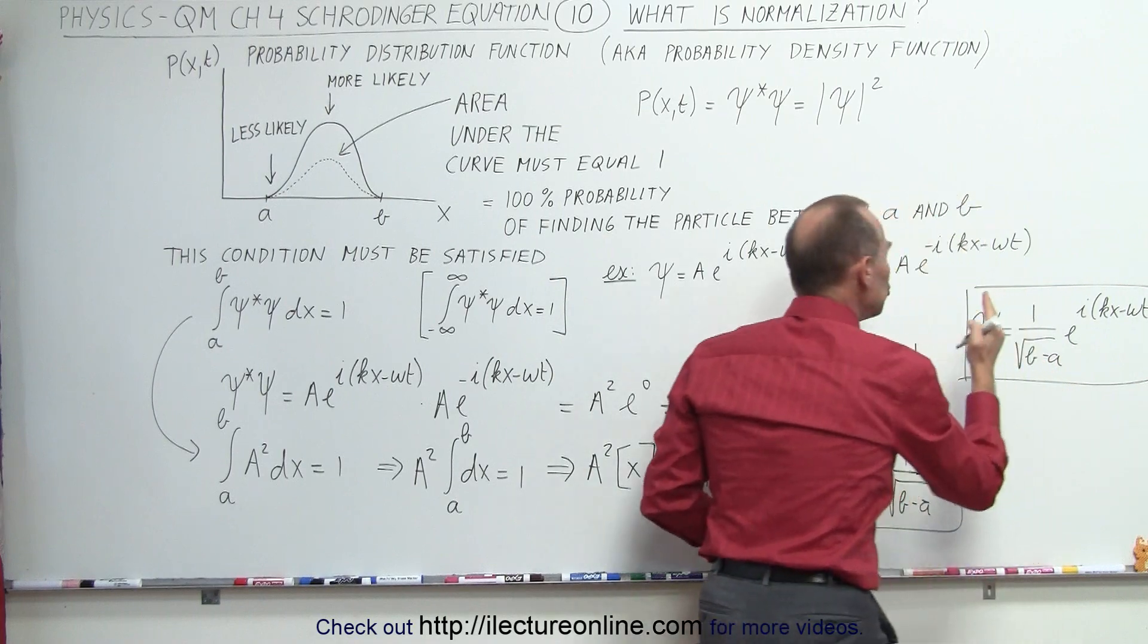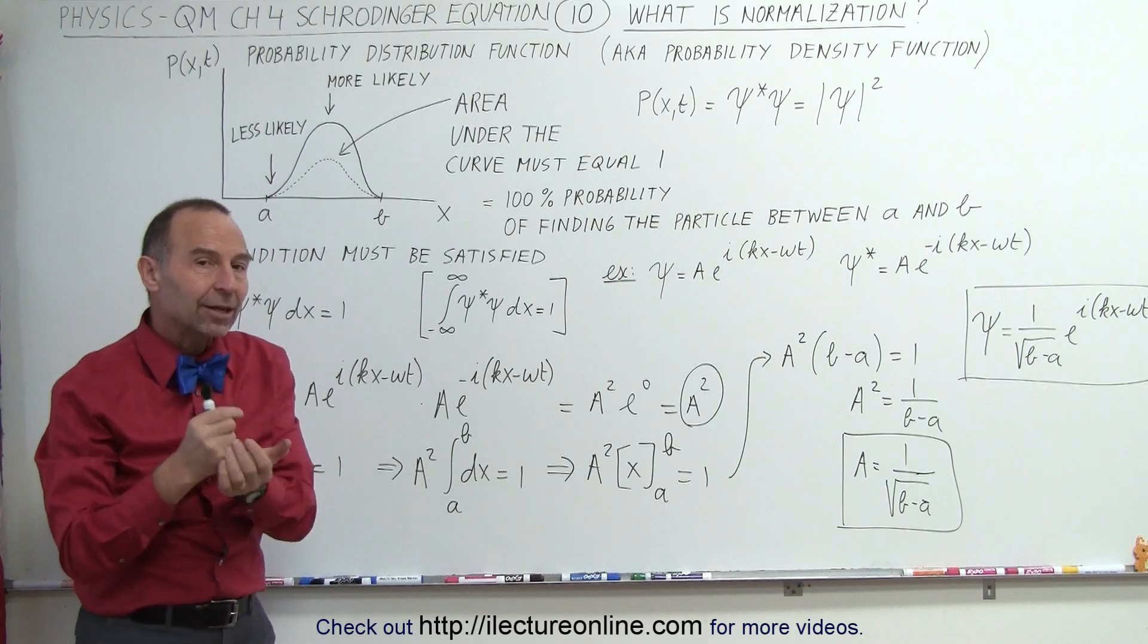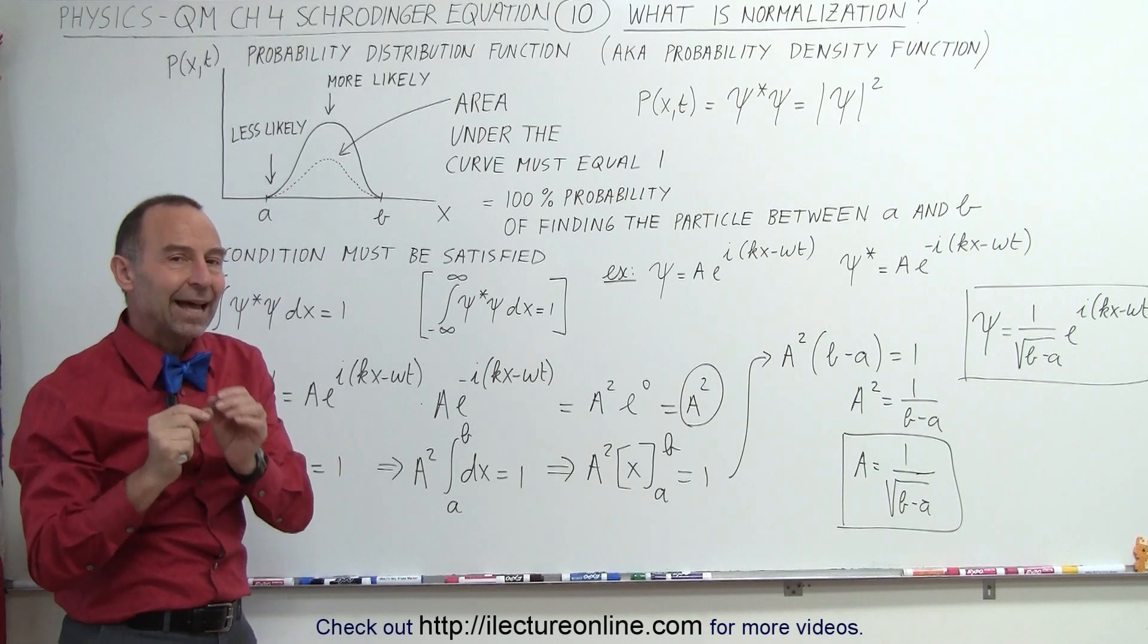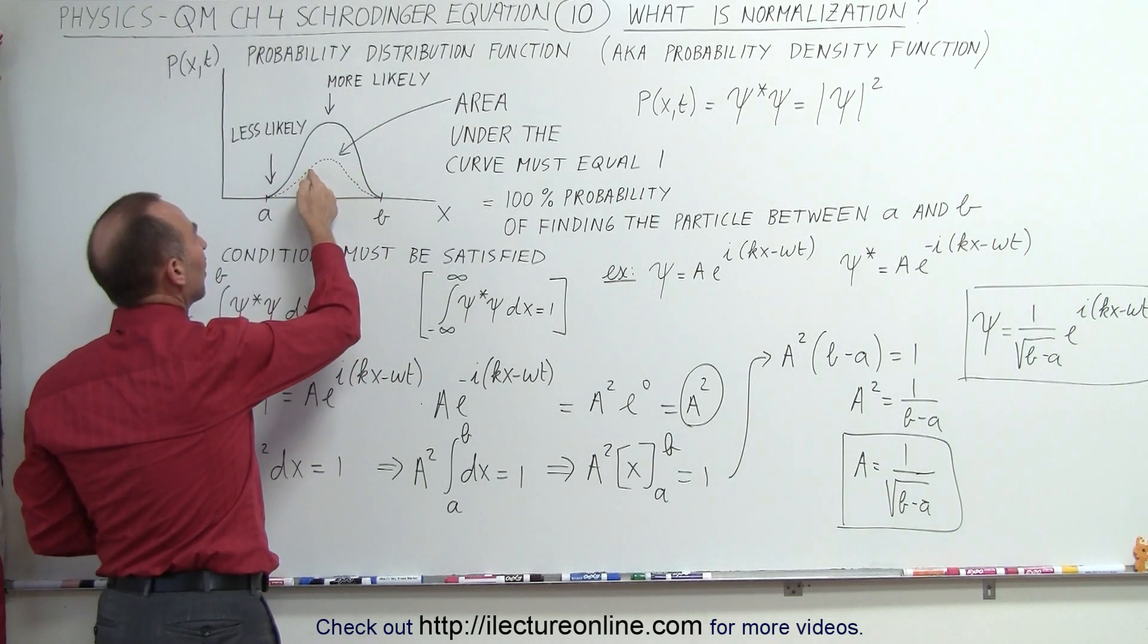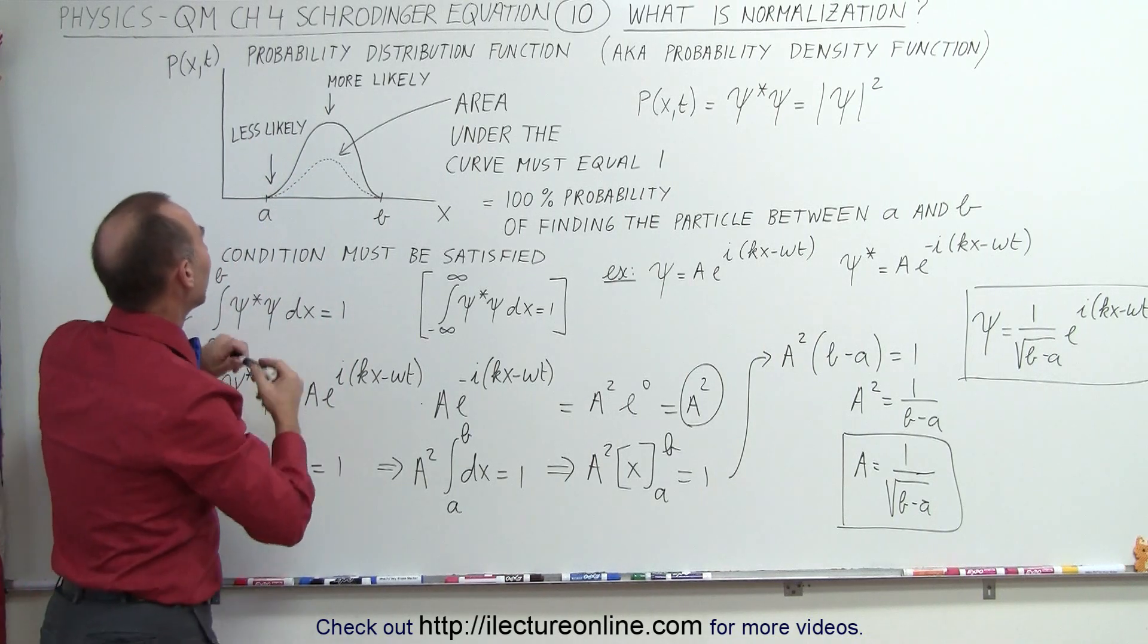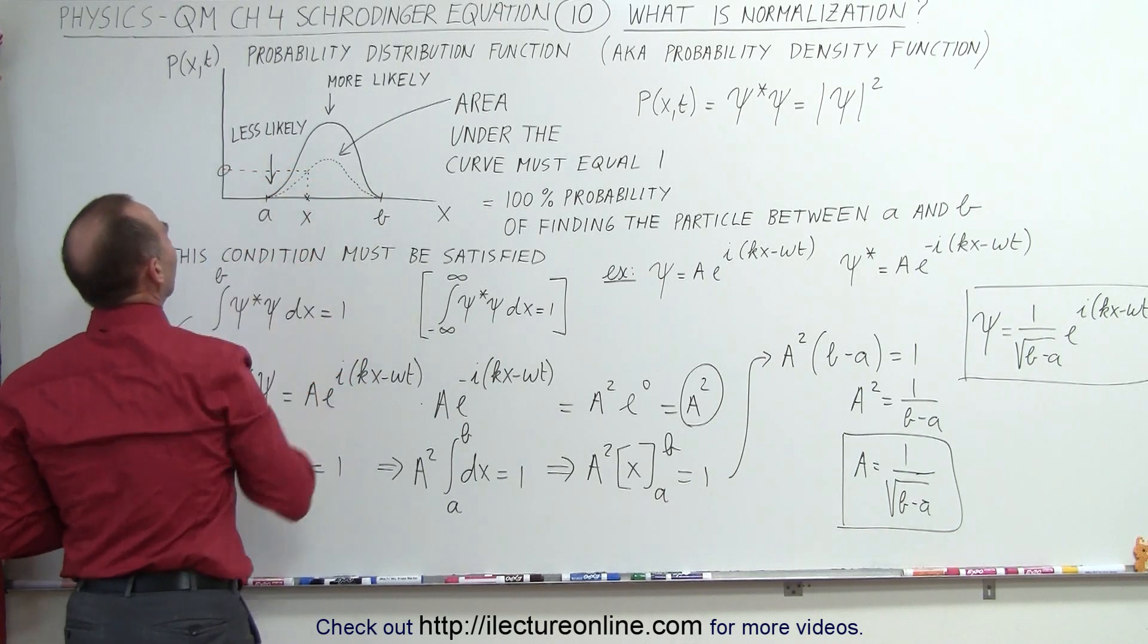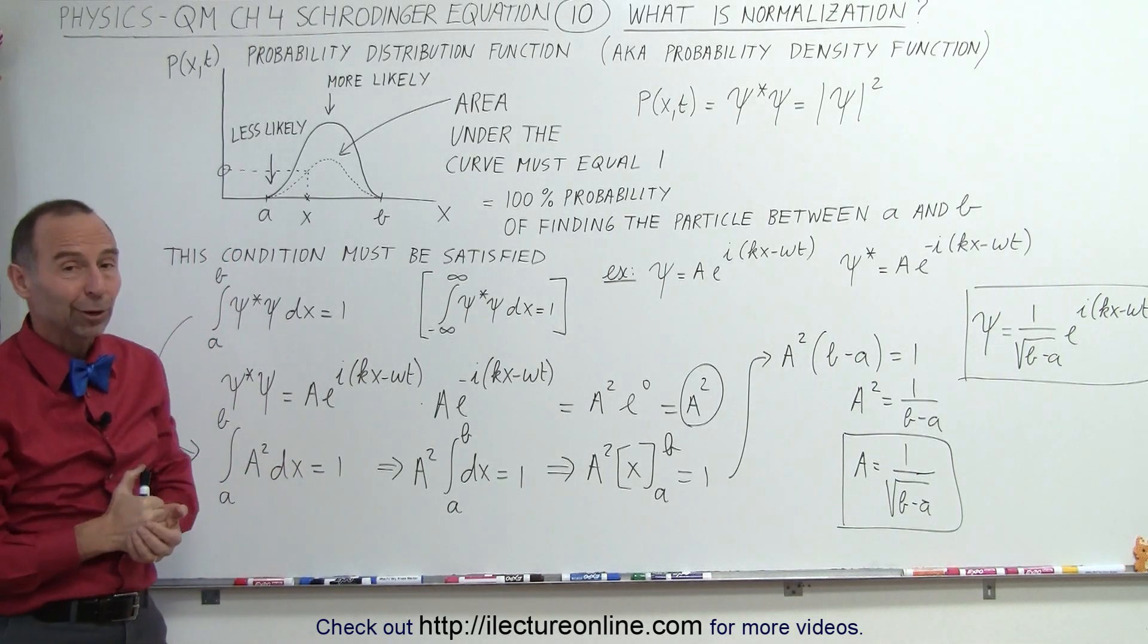Now what we have is a normalized wave function. That's exactly what we mean by normalization. We've been able to take the constant of the wave function, find its proper value, so that when we draw the probability function, we know that the area under the curve will be exactly equal to one. That means that any point along that line, along that function, represents the true probability of finding the particle at that location. So all we have to do is pick a value for x, right here, and then we read off the probability of finding that particle at that particular location. And that's, again, what we mean by normalization.